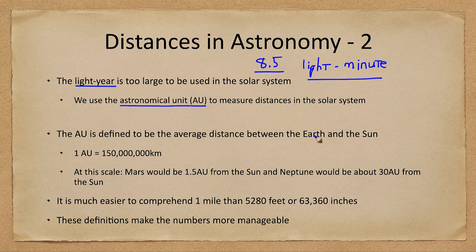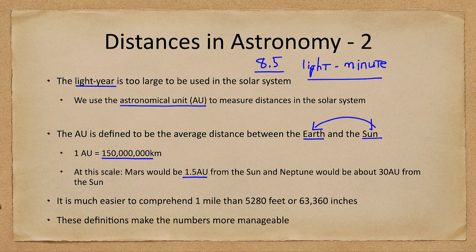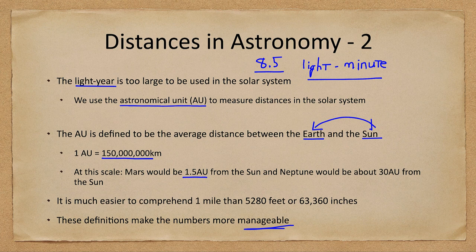The astronomical unit does not depend on light, but actually depends on the Earth-Sun distance. One astronomical unit is 150 million kilometers. So it's a lot easier to say one and a half astronomical units than 225 million kilometers. Neptune is 30 astronomical units away. The whole idea of using these definitions is to make the numbers more manageable and easier to understand.